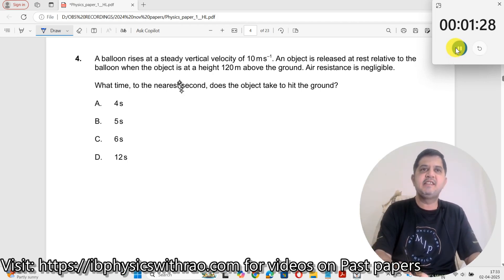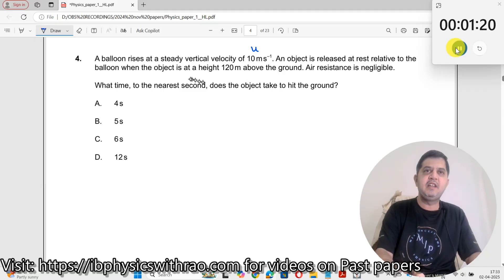Question number 4. A balloon rises at a steady vertical velocity of 10 meters per second. An object is at rest relative to the balloon when the object is at a height of 120 meters above the ground.